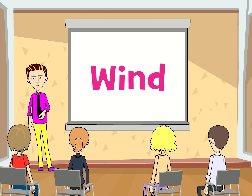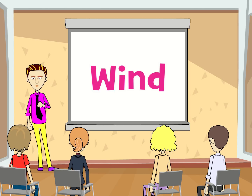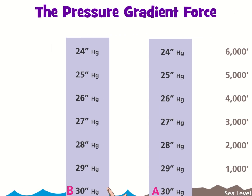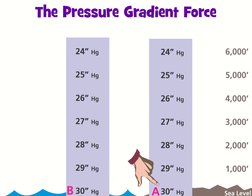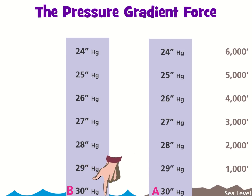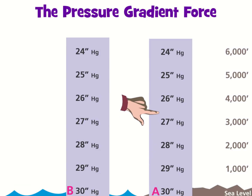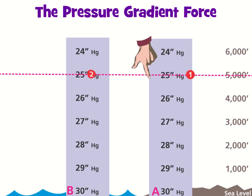So, what does a pressure gradient force actually mean? Well, let's find out. Here's a slice of the atmosphere showing two columns of air having equal surface pressure at sea level — 30 inches of mercury in column A and column B. In other words, if each of these columns were resting on a scale, they would weigh the same. We know that atmospheric pressure decreases approximately 1 inch of mercury for every 1,000 feet of altitude change. Therefore, at 5,000 feet in both columns of air, the pressure at positions 1 and 2 is 25 inches of mercury.